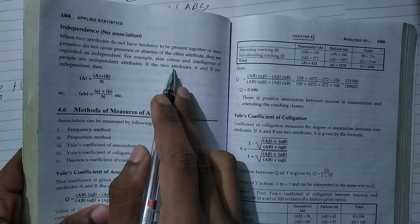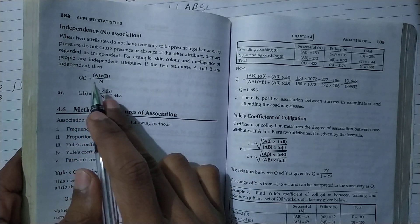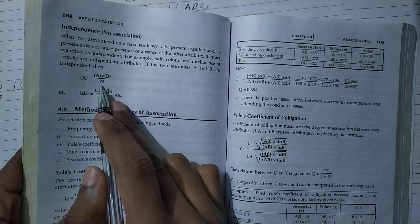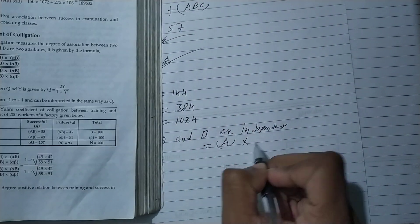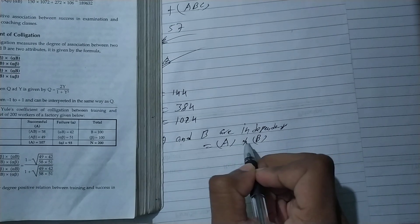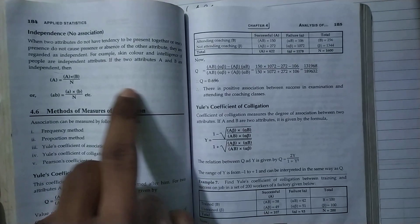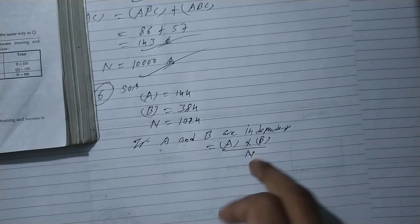If the two attributes A and B are independent, then A is equal to A T by N. So, bracket of A into bracket of B by... and this formula.